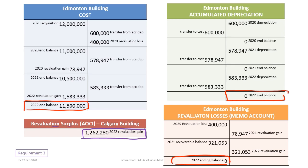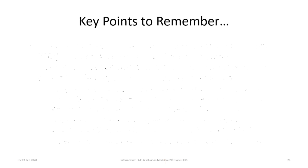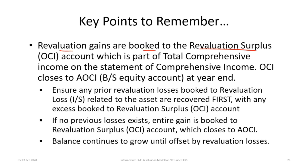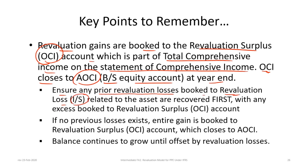This process continues for as long as we own the building. To summarize: revaluation gains are booked to the revaluation surplus account, which is an OCI account forming part of total comprehensive income. OCI is closed to accumulated OCI (a balance sheet equity account) at year end. Any prior revaluation losses related to that asset must be recovered on the income statement first, with any excess booked to revaluation surplus. If no previous losses exist, the entire gain goes to revaluation surplus.